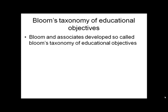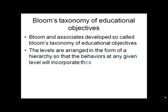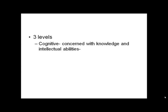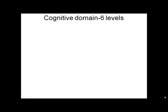Bloom's Taxonomy of Educational Objectives: Bloom and his associates developed the so-called Bloom's Taxonomy of Educational Objectives. The levels are arranged in the form of a hierarchy so that behaviors at any given level incorporate those of the levels below. Three domains are: first, cognitive — concerned with knowledge and intellectual abilities; second, affective — meaning attitude, values, interest and appreciation; third, psychomotor domain — concerned with motor skills.